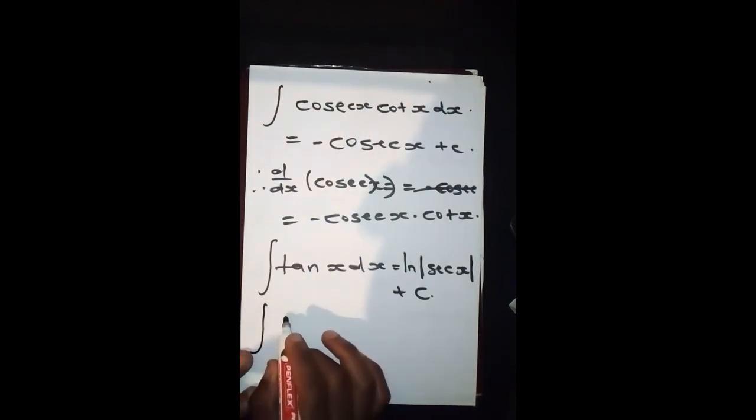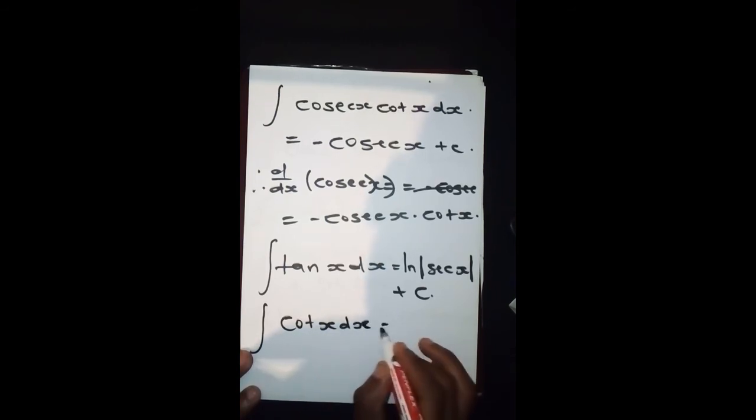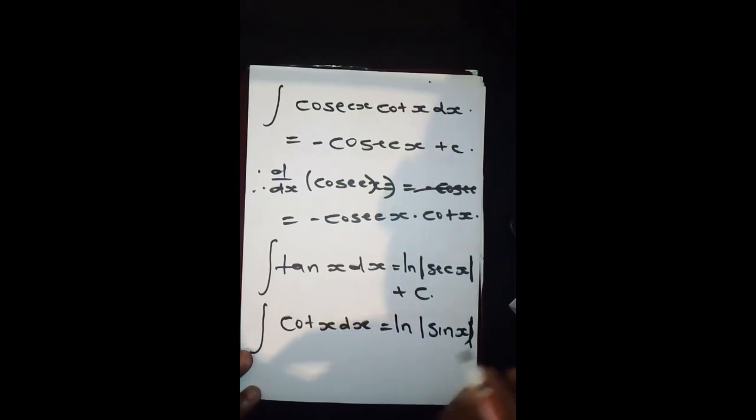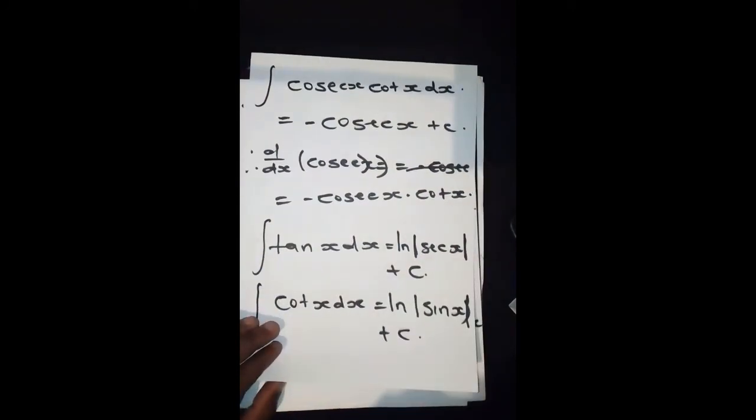And then we also have cot(x)dx, which gives us ln|sin(x)| plus C.